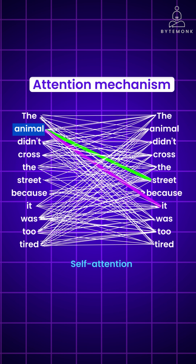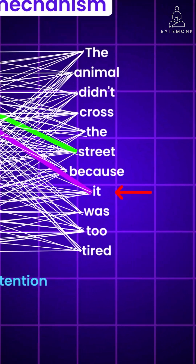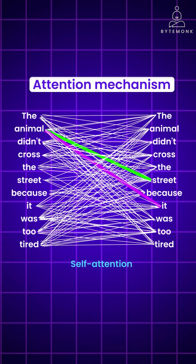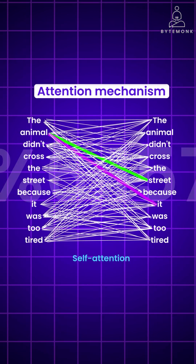This is called self-attention, and the ability to learn attention in this way across the whole input significantly improves the model's ability to encode language. So when the model is trying to figure out what the word it refers to, it uses attention.